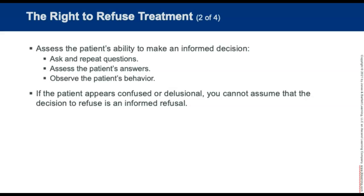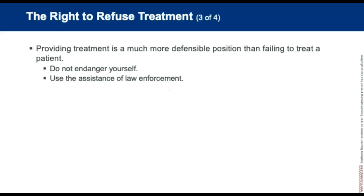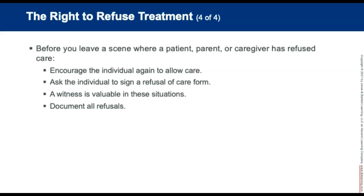When treatment is refused, you must assess the patient's ability to make an informed decision — ask and repeat questions, assess the patient's answers, and observe the patient's behavior. If the patient appears confused or delusional, you cannot assume that the decision to refuse is an informed refusal. When in doubt, providing treatment is a much more defensible position than failing to treat the patient. Do not endanger yourself to provide care; use the assistance of law enforcement to ensure your own safety. Before leaving the scene, encourage the patient, parent, or caregiver to permit treatment and to call for an ambulance if they change their mind.